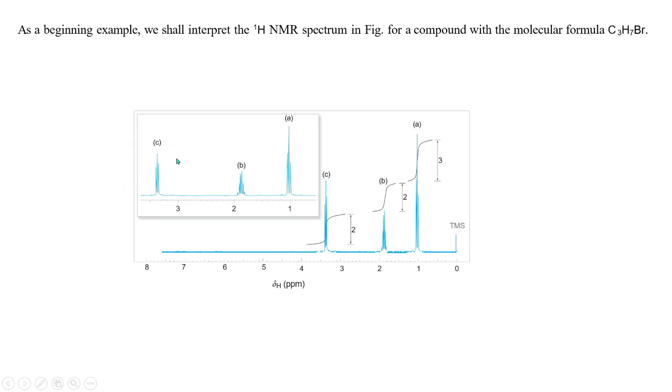Now, how to interpret the structure? Let's see. For this proton B we are getting a sextet, that means in the neighboring carbon there should be five hydrogens. That means this CH2 must have a CH3 group here and a CH2 group here. Then only this will give a sextet. Then if you see this A proton, this is giving a triplet, that means the neighboring carbon has two hydrogens. So this will give a triplet if the neighboring carbon has two hydrogens.